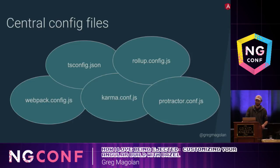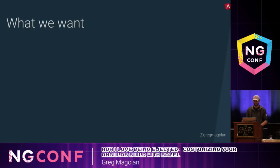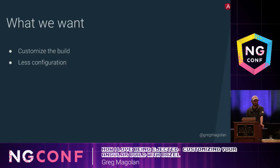All of this configuration is usually kept in a few central places, like the webpack config file, the TypeScript config file, and the karma config files, for example. When config files are central like this, they can sometimes get to be large and complicated, and they can also cause a lot of merge conflicts for your team. So in an ideal world, we would be able to customize an Angular build with far less configuration to worry about.